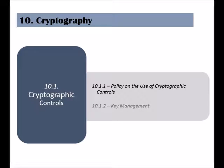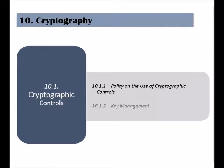The sixth clause of this standard is called Cryptography. This clause has only one category and two controls. The category is called Cryptographic Controls, and its objective is to ensure the protection of the CIA triad of information, which is confidentiality, integrity, and availability.